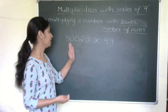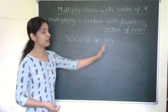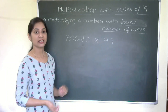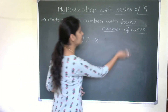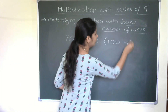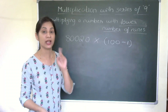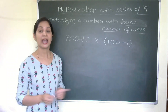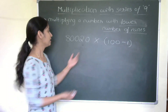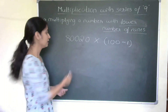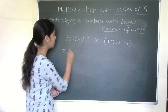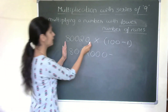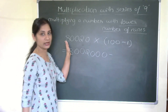Now here's a question: 80020 multiplied by 99. You can also try 999. We replace 99 with 100 minus 1 — similarly, 999 would be 1000 minus 1. Multiplying 80020 by 100 gives 8002000. Then subtract 80020 from that number.